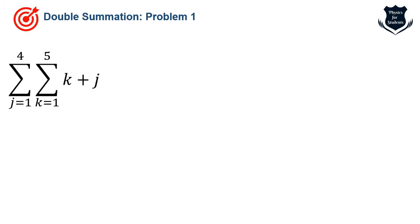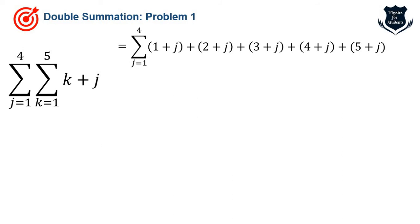Now let's look at examples. The first problem is: sigma j=1 to 4 of sigma k=1 to 5 of (k+j). As discussed, we take the innermost sum first — k=1 to 5 — keeping sigma j=1 to 4 as it is. We vary k from 1 to 5 and get 1+j, 2+j, 3+j, 4+j, 5+j.